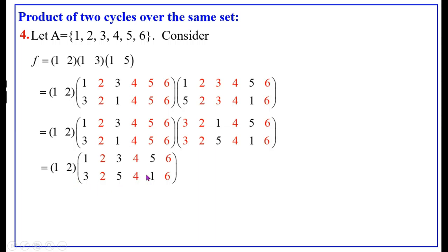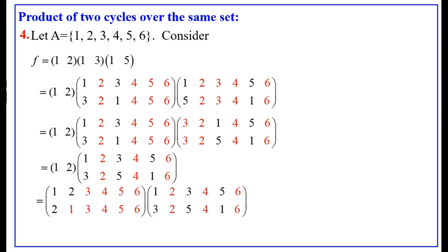Now we are going to multiply these two. This is a permutation and this is a cycle. We write cycle (1, 2) as a permutation: 1→2, 2→1, and for the rest of elements 3, 4, 5, 6, they map to themselves. That is: 1→2, 2→1, 3→3, 4→4, 5→5, 6→6.